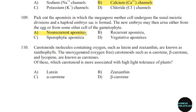110th question: Carotenoid molecules containing oxygen such as lutein and zeaxanthin are known as xanthophylls. The unoxygenated carotenoids such as alpha-carotene, beta-carotene, and lycopene are known as carotenes. Which carotenoid is more associated with high light tolerance of plants? Correct answer: Option B — Zeaxanthin.